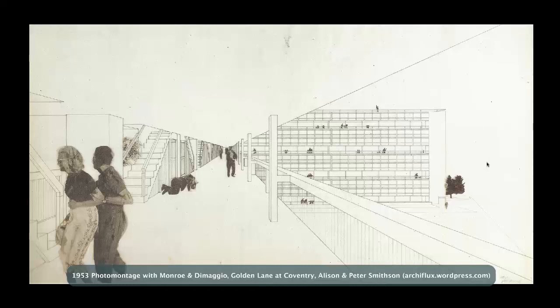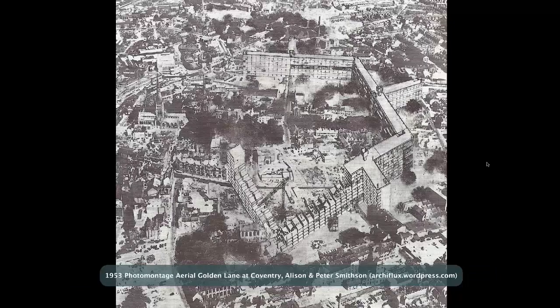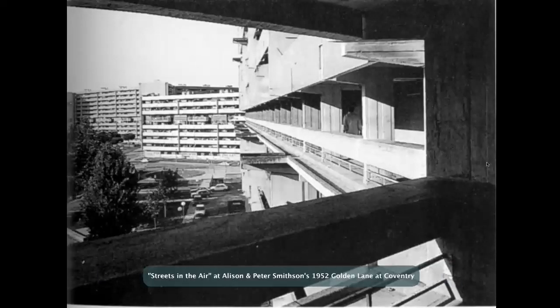Corbusier steals the thunder by thinking of this decades before Team 10 — and the streets-in-the-air idea of the Unité d'Habitation fits into these linear blocks in the traditional city. In this competition, Alison and Peter Smithson — primary figures in Team 10 — bring in this idea of streets in the air where social life occurs at multiple levels, with Marilyn Monroe and Joe DiMaggio in the foreground. You see multiple streets in the air, unlike the Unité d'Habitation, connecting buildings across the landscape. It gets built, it works, but then it doesn't work — the sense of publicness of these streets in the air leaves much to be desired.